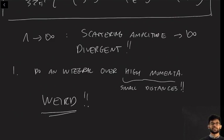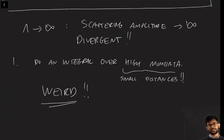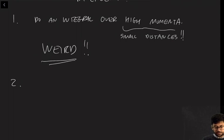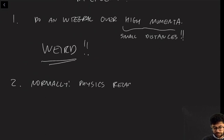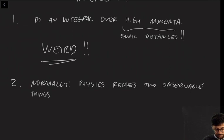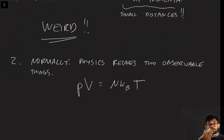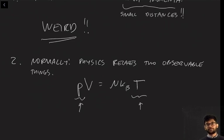This is odd — this kind of thing doesn't happen in elementary physics normally, and it's a sign that something odd is going on. Now, normally in physics, physics relates one observable quantity to another. For example, take the ideal gas law: PV = nkT. This is a great equation — it relates two observable things. Temperature is observable, pressure is observable, volume is observable. This is how physics should work: it should relate an observable thing to another observable thing.